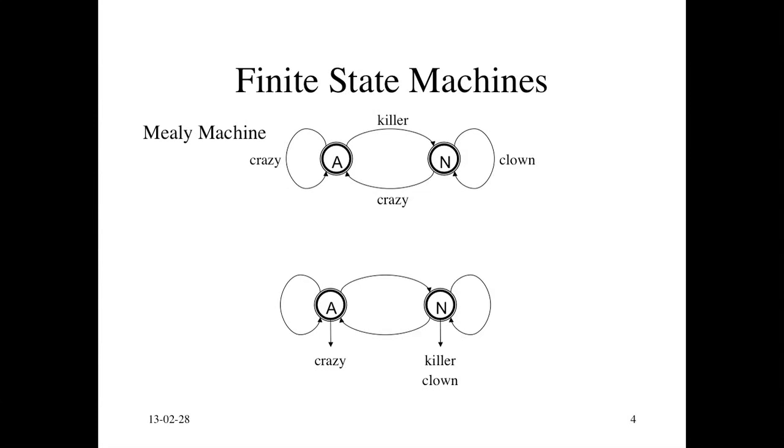Then the transition doesn't actually have any words on it. In this case, the noun state generates killer and clown. This is called a Moore machine. It turns out that these two representations are exactly equivalent. You can prove that, although we won't do it here.